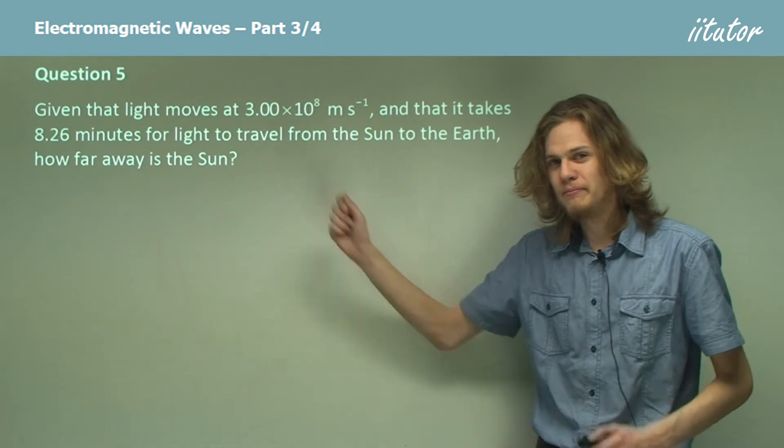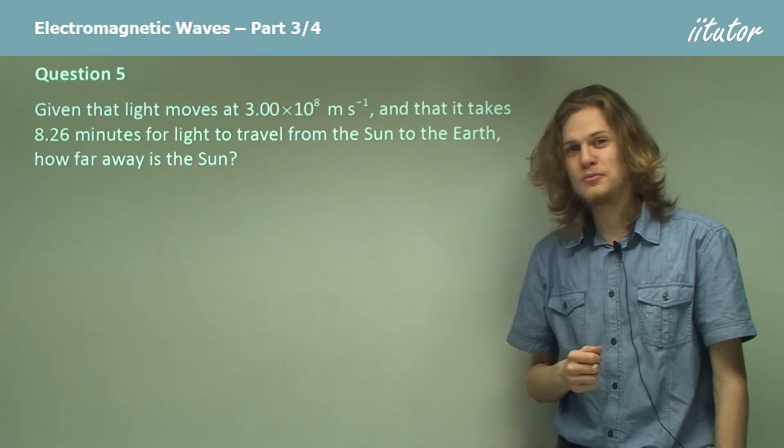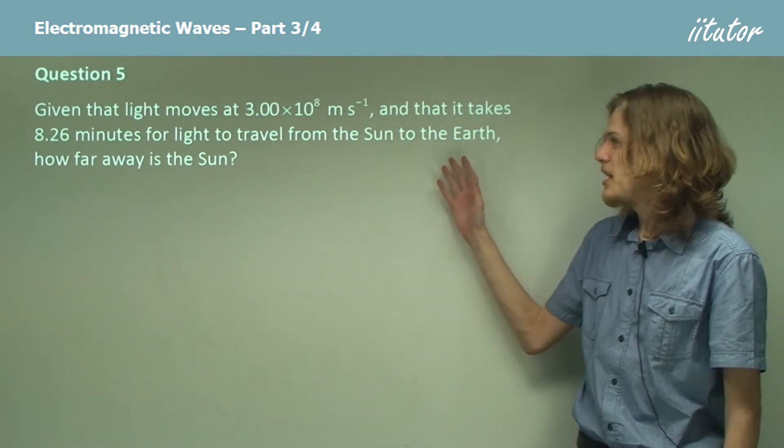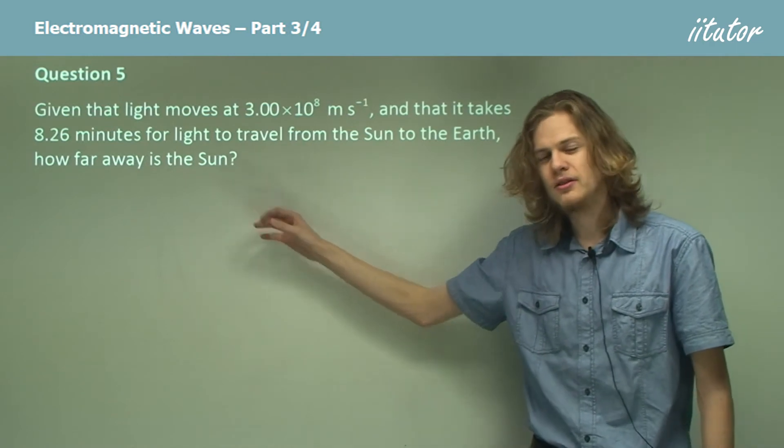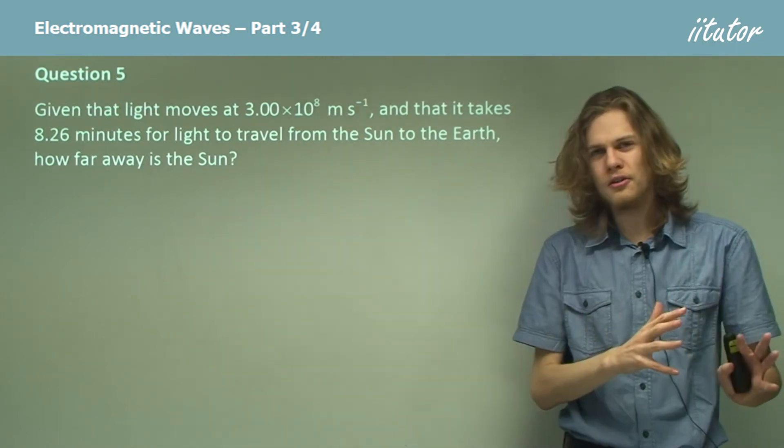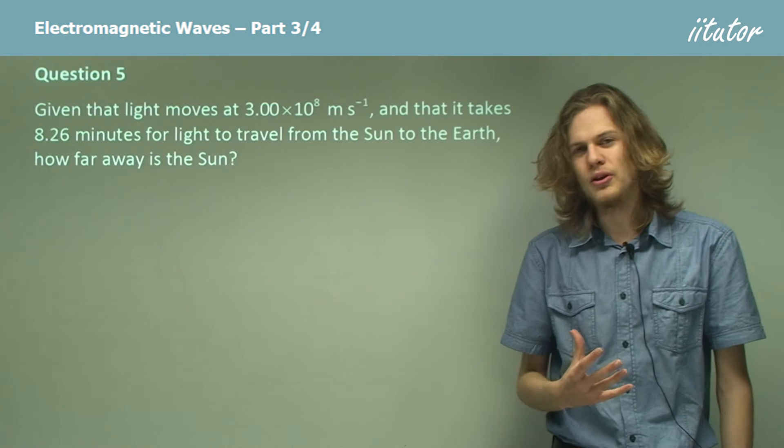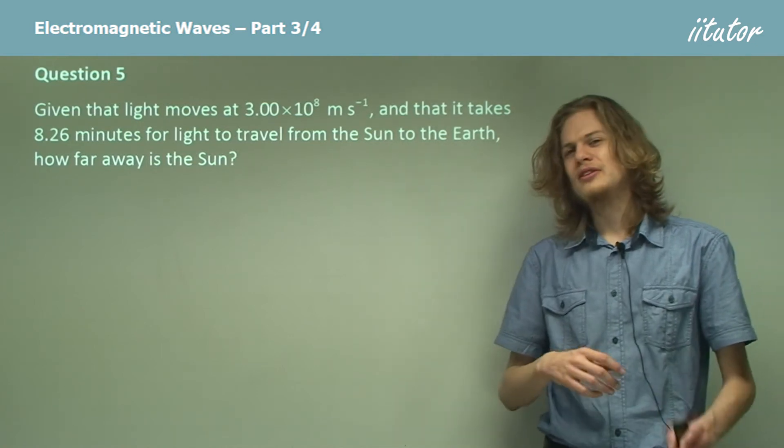Given that light moves at this speed, 300 million metres per second, and that it takes 8.26 minutes for light from the sun to reach Earth, calculate the distance between the two. So this shouldn't be too hard a question.